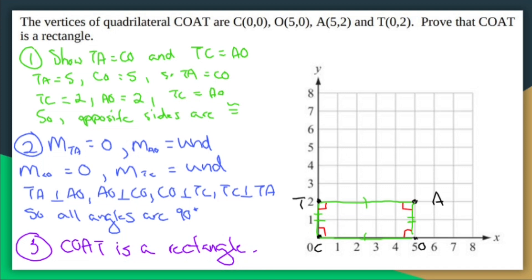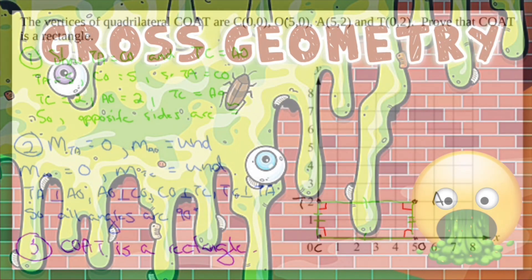Opposite sides are congruent and all angles are 90 degrees. Therefore, COAT is a rectangle. That's coordinate geometry proof — you're just proving what you need to prove to explain yourself, not making two columns.